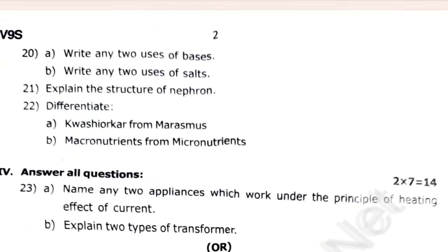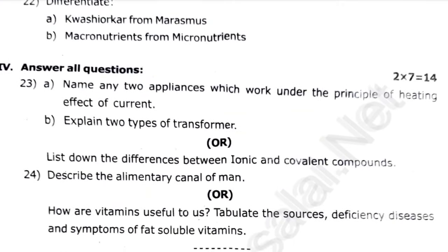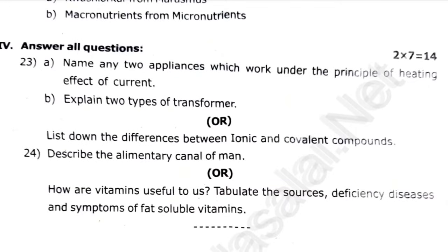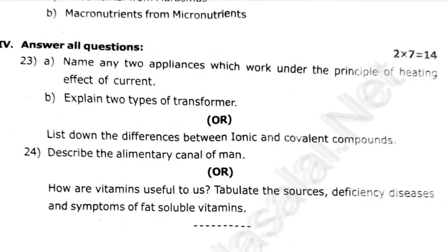If you have 7 marks, A and B — we need 2 applications to work under the principle of heating effect of current. Then we can explain the 2 types of transformation.